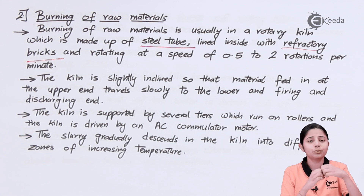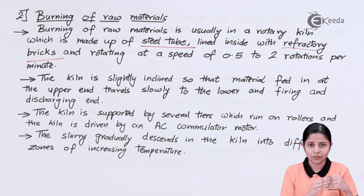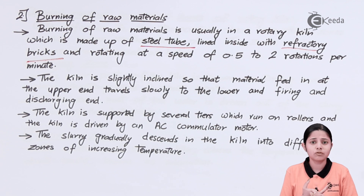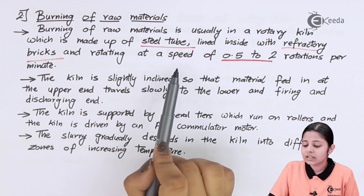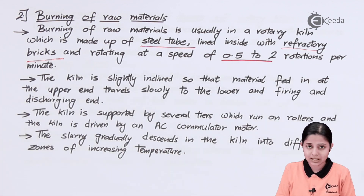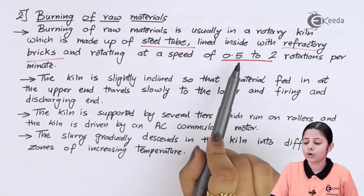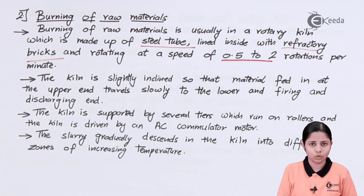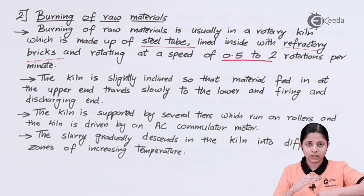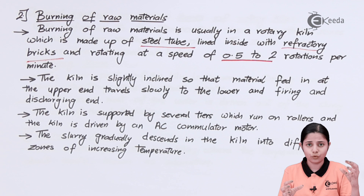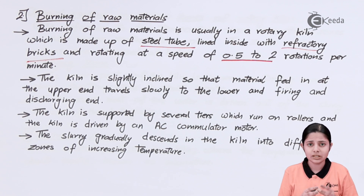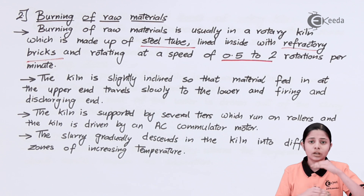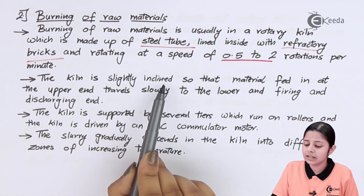The refractory bricks lining the steel tube ensure that the burning of raw materials takes place properly, because the heat maintained inside will not escape outside and outside temperatures will not enter. The bricks themselves are very resistant to heat — they will not get burned or react at high temperatures. The rotary kiln rotates at a speed of 0.5 to 2 rotations per minute, ensuring that all raw materials receive heat uniformly and mix homogeneously so the paste gets burned properly.